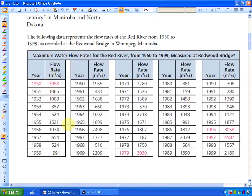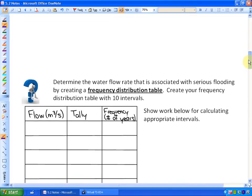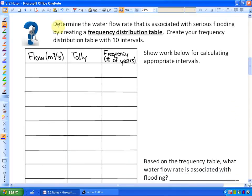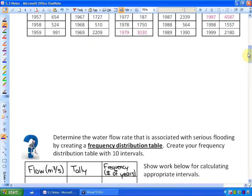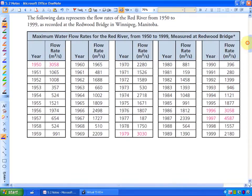So this looks like a very big jumbled mess, and we'd like to organize this. As you can see, if you flip the page if you're in my class, it says determine the water flow rate associated with serious flooding by creating a frequency distribution table. So what we're going to do is organize this into categories, or what we call intervals. In order to do that, what we'd first want to do is see if we can identify, and again you can pause this as you'd like.